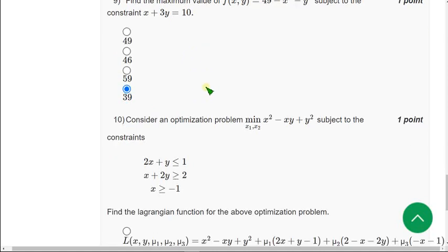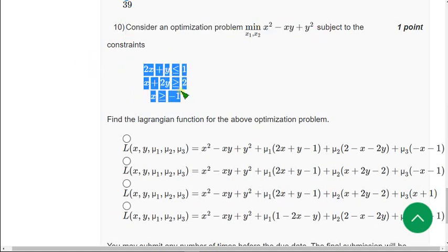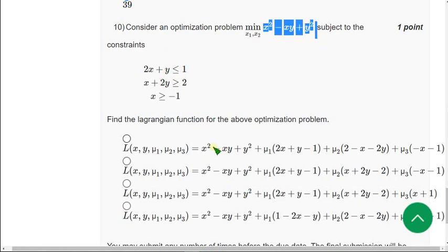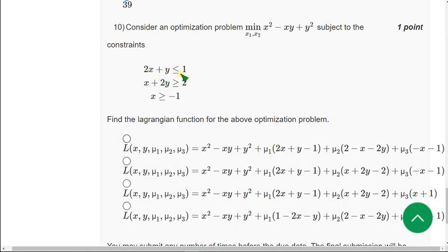And moving on to the final equation of the assignment. Consider an optimization problem. x2 minus xy plus y2. So, they have given three constraints. The probable answer for tenth equation may be third option. x2 minus xy plus y2. Directly given equation. It is common in every option. Plus, mu1 of if we send this one to left hand side and two also the same. And this minus one will give x plus one. All the constraints fulfilled in only one option. That is, third option. Mark third option as probable answer.